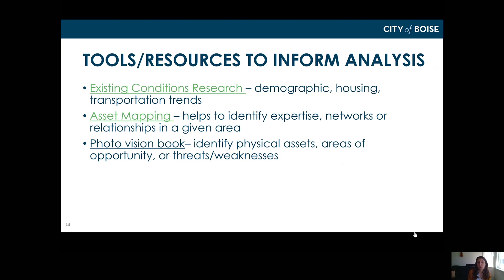Once we start a neighborhood SWOT analysis, it's helpful to have good information to inform that analysis — what we call existing conditions research. We could get demographic data: how many people live in our neighborhood, housing units, transportation facts like bus routes. You could also complete an asset mapping activity to identify expertise, networks, and relationships in your neighborhood. And you can create a photo vision book with concrete examples of opportunity areas or challenging areas.